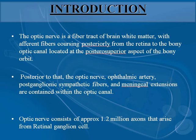Afferent fibers course posteriorly from the retina through the bony optic canal, located at the posterior superior aspect of the bony orbit. Posterior to that, the optic nerve, ophthalmic artery, post-ganglionic sympathetic fibers, and the meningeal extensions are contained within the optic canal. The optic nerve consists of approximately 1.2 million axons that arise from the retinal ganglion cells.